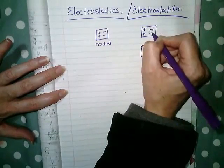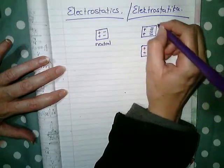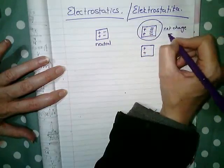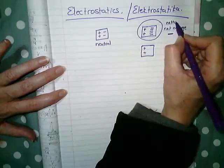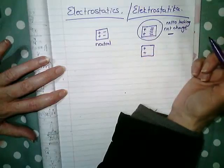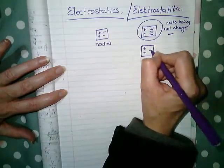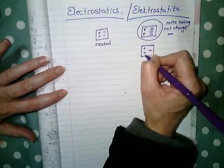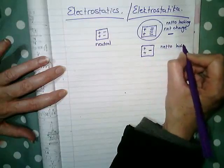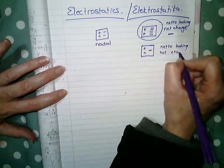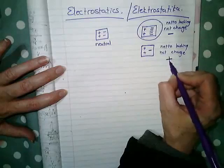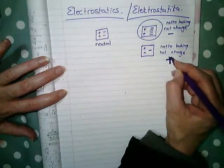So if you have more negative charges than positive charges, then your net charge on an object is negative. So jou netto lading is negative as jy meer negatieve ladings as positive ladings het. Dan, as jy minder negatieve ladings het as positive ladings, dan is jou netto lading positief.